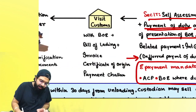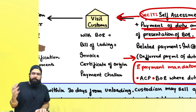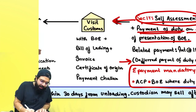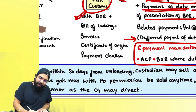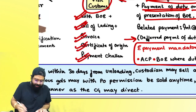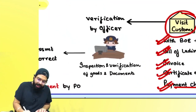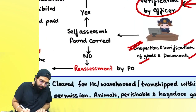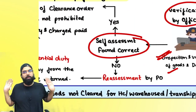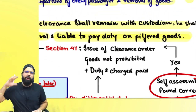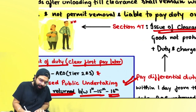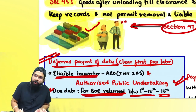You file your bill of entry, do self-assessment, make duty payment, then visit customs with the bill of entry, bill of lading, invoice, certificate of origin, packing list, and payment challan. The custom officer will inspect goods and verify documents. If self-assessment was correct, all duties are paid, and goods are not prohibited, he will issue a clearance order. You take the clearance order to the custodian, who will allow you to take the goods home.